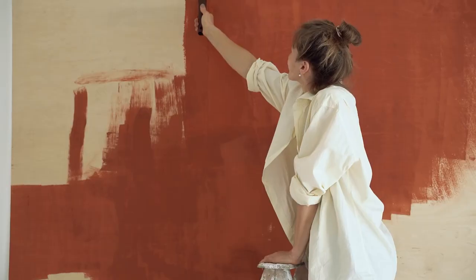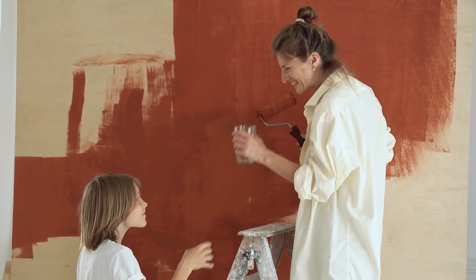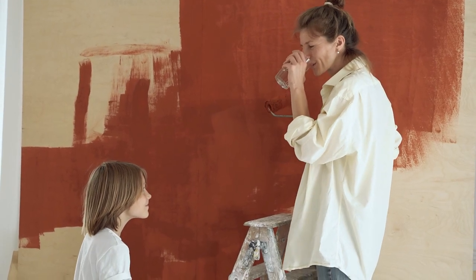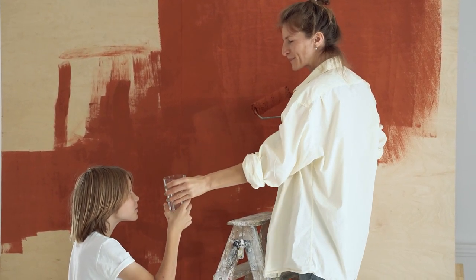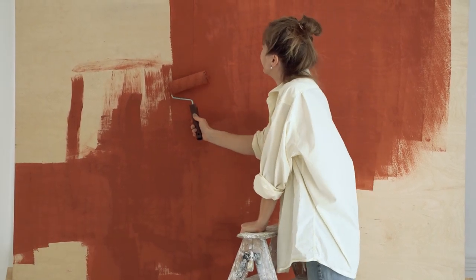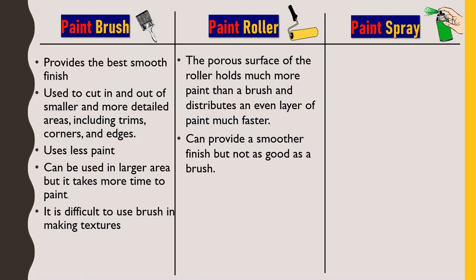The roller can provide a smoother finish, but not as good as a brush — the smooth finish of a brush is much better comparatively. Using the roller is not a big deal: just dip it in the paint bucket and roll it over the surface. But using a paint brush needs skill — better skill leads to better finish — and since people have practiced using a brush for many years, they have mastered this skill and can provide the best finished surface.